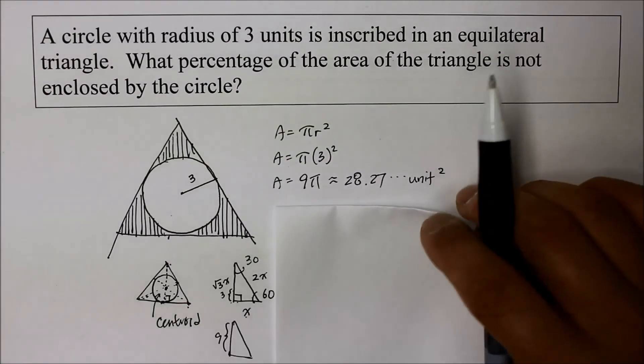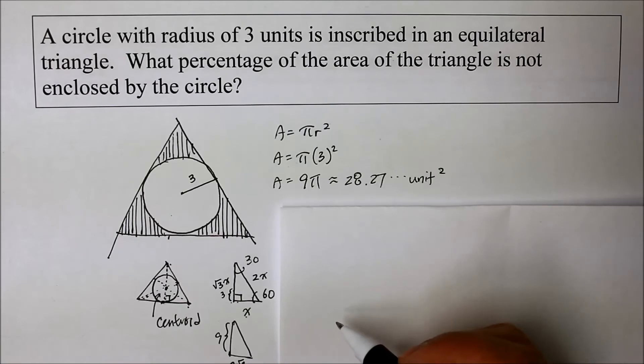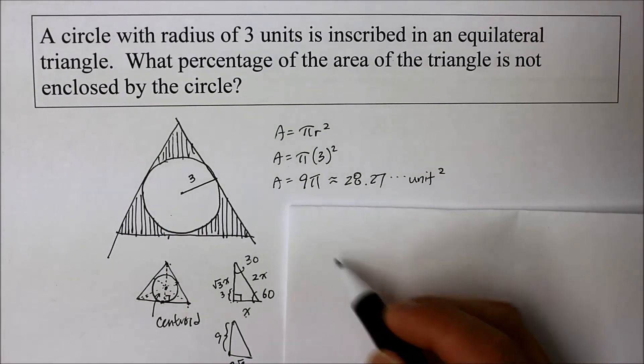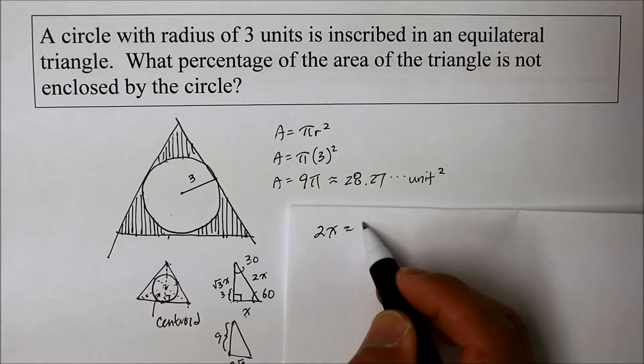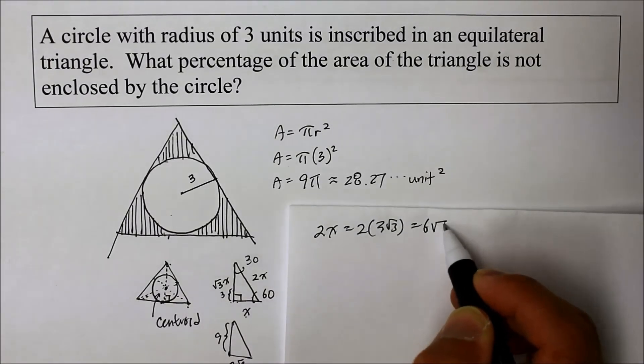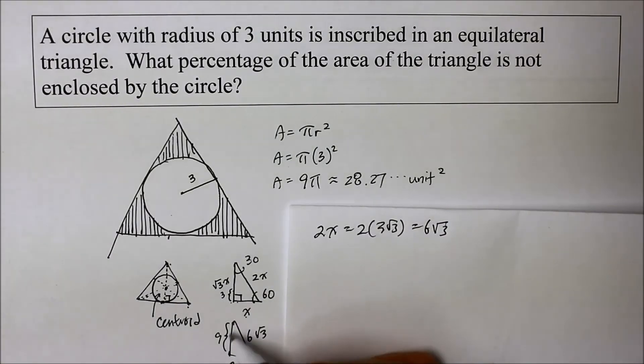So now, we know that this is three square root of three. And that means that twice of that is here. So this hypotenuse, two x is equal to two times x, which is three square root of three. Therefore, this becomes six square root of three. So that's six square root of three. And the height, we said it was nine.